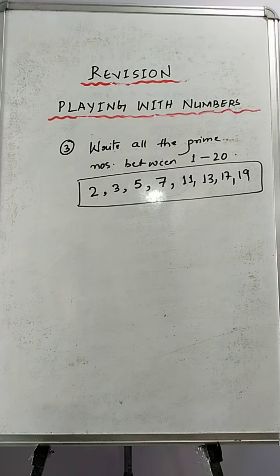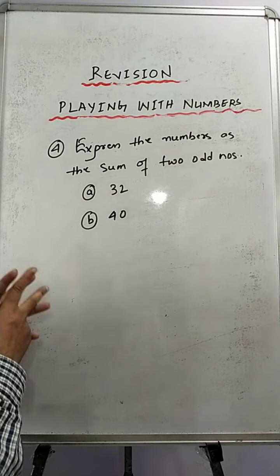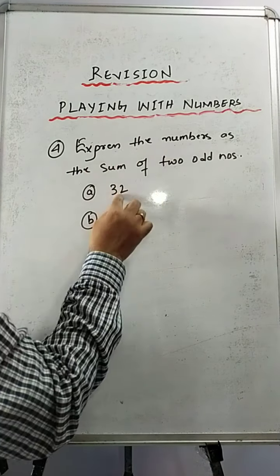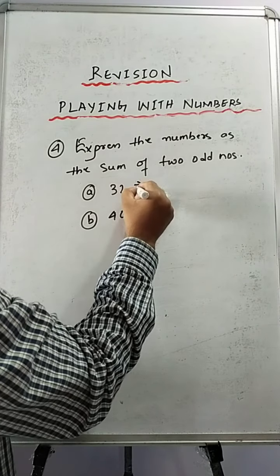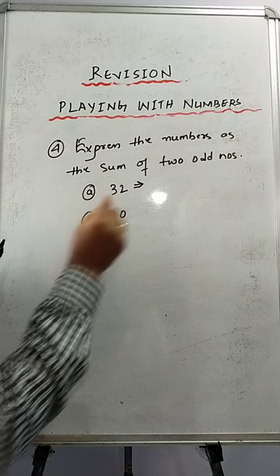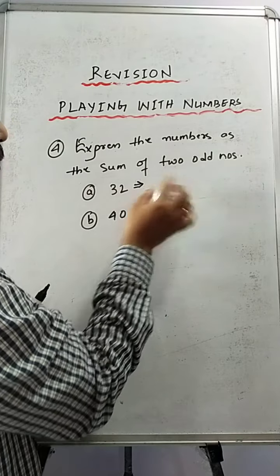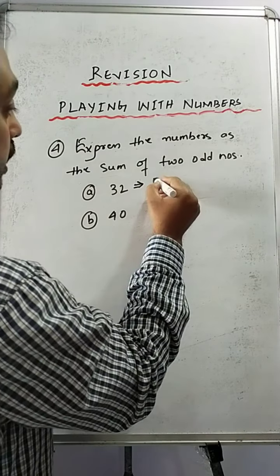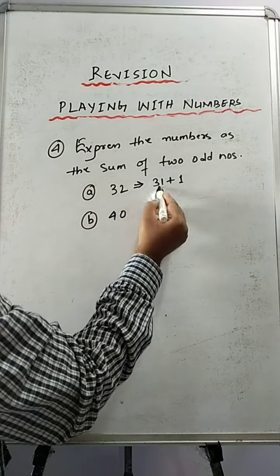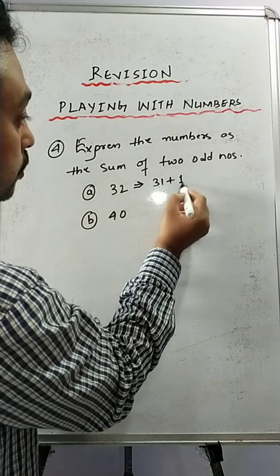Now let's move on to sum number 4. This is also a very important and very interesting question. Question number 4: express these two numbers as the sum of two odd numbers. That means we have to split this number into two numbers, but those two numbers should be odd numbers. The sum should be 32. So we can write 31 plus 1 — 31 plus 1 is 32, and 31 is an odd number, 1 is also an odd number.